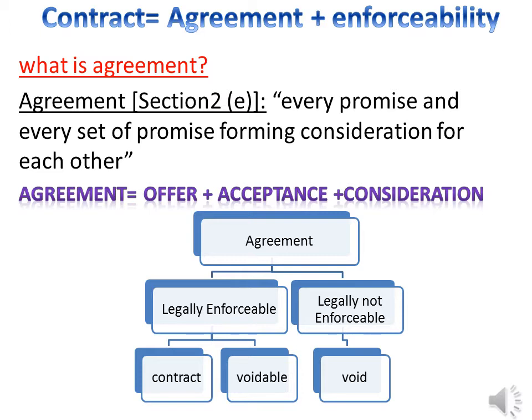What is an agreement? As per Section 2(e), an agreement means every promise and every set of promises forming consideration for each other. The formula is: Agreement equals Offer plus Acceptance plus Consideration. An agreement which is enforceable is called a contract, and an agreement which is legally not enforceable is a void contract.